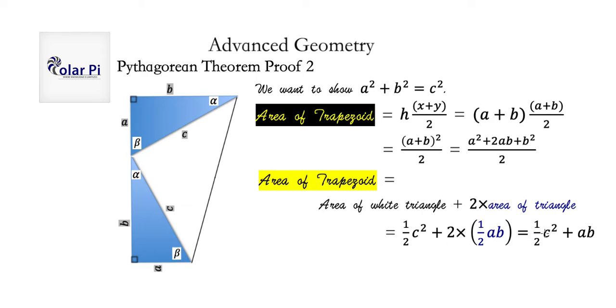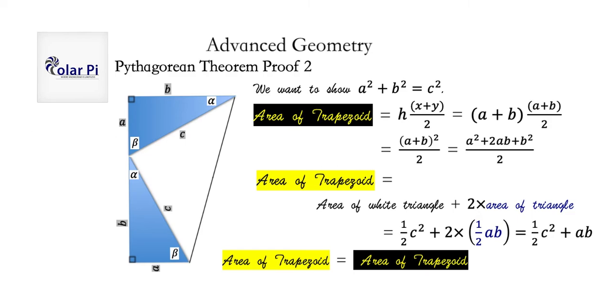So, this here is the area of the trapezoid. But this here is also the area of the trapezoid. And it doesn't matter how we calculate the area of the trapezoid. It's the same trapezoid. So, it's got to have the same area regardless of the methods. So, we conclude that this here has to be equal to this here. Then this equation has to hold true.